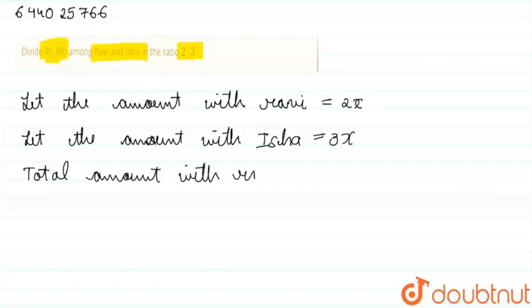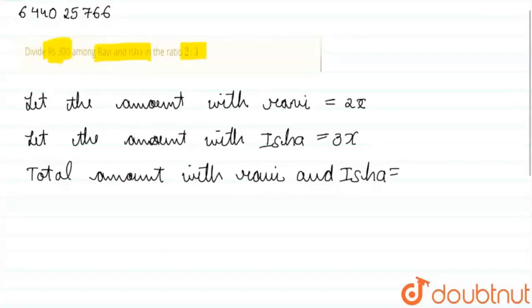Total amount with Ravi and Isha will be the sum of the individual amounts, so it will be 2x plus 3x, so it will be 5x.